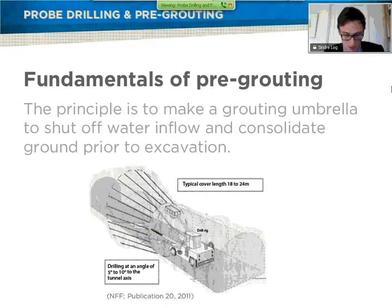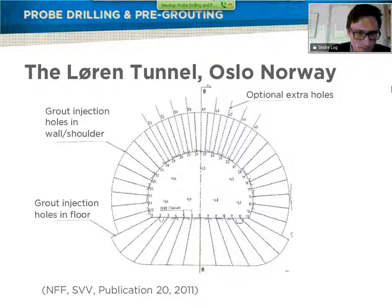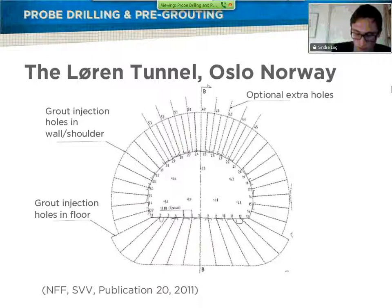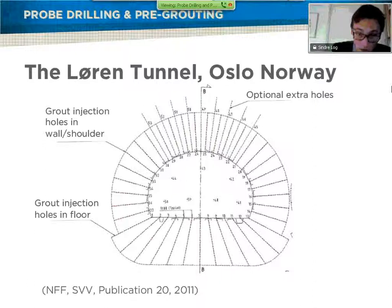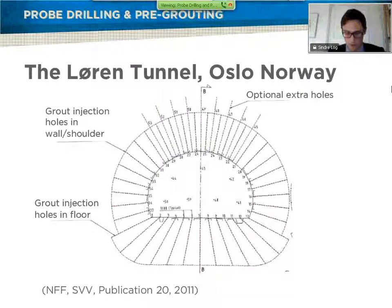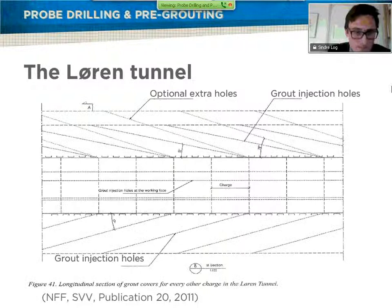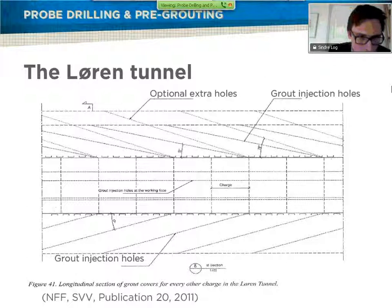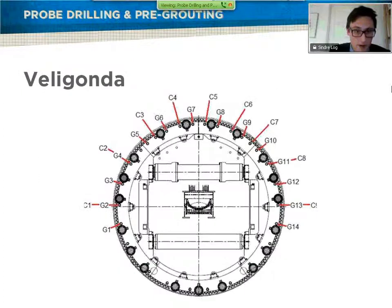Before going into the TBM part, here are some short examples from the Lurin Tunnel, a drill-and-blast tunnel going beneath an urban environment. The overburden in the tunnel is only approximately 2 meters. The borehole length of the grouting holes is 23 meters. They have 44 grouting holes plus some optional holes at the top, and 7 holes in the face. Grouting pressures used are between 30 and 80 bars, with grouting stops approximately every 11 meters.